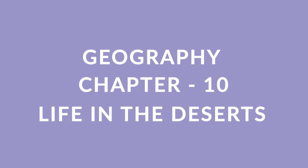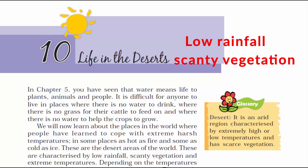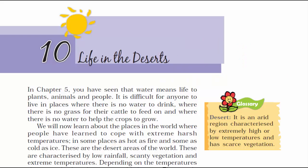Welcome to the 10th chapter of Class 7 Geography, Chapter 10: Life in the Deserts. Whenever we think of desert, we think of low rainfall, scanty vegetation and extreme temperatures. Depending on the temperatures, they can be hot deserts or cold deserts. In this chapter, we will be reading about deserts around the world and how people have adapted to the extreme temperatures of these deserts.